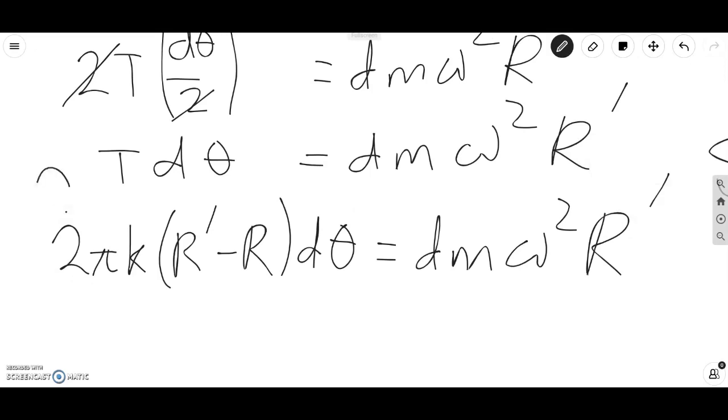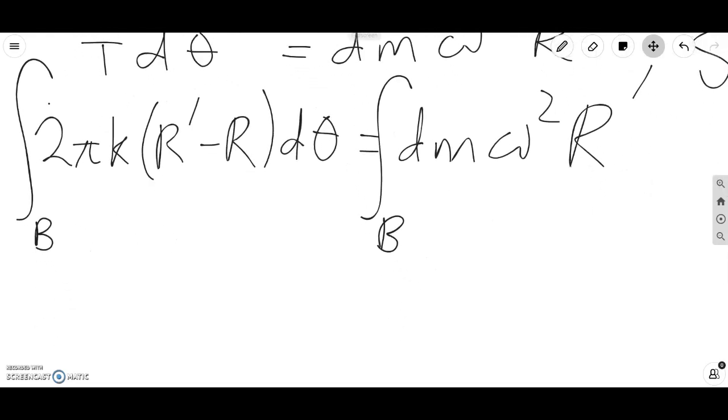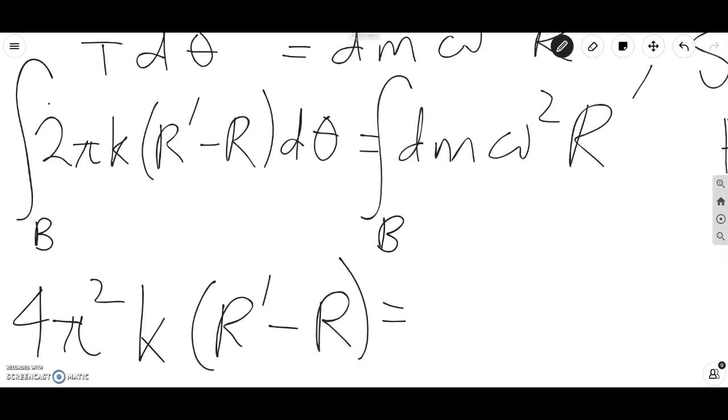So performing the integral, we can integrate this around the whole rubber band. We're just integrating around the circle. And when we integrate, we know that everything else is a constant except for d theta and dm. So if we integrate d theta around the whole rubber band, we're basically subtending a whole circle. So the integral of d theta is 2 pi. So what we get on the left-hand side is 4 pi squared K R prime minus R. And on the right-hand side, if we integrate dm over the whole rubber band, we're just getting the mass of the whole rubber band. We get m omega squared R prime.